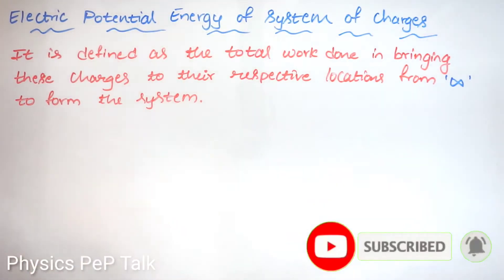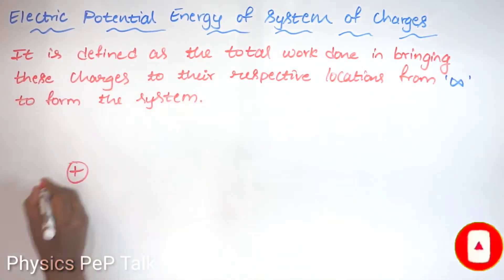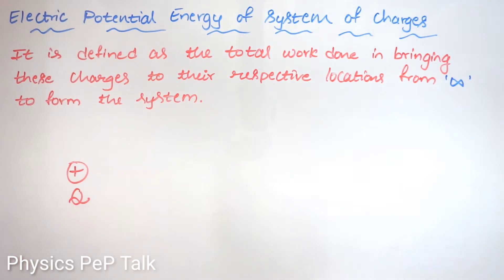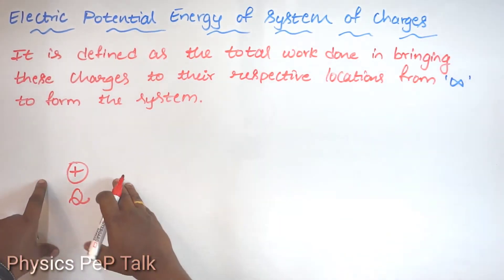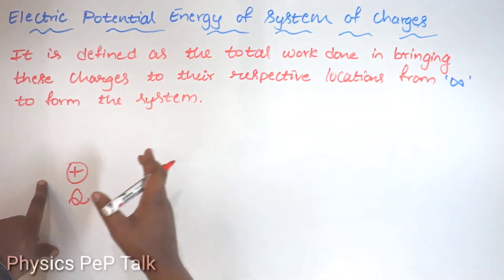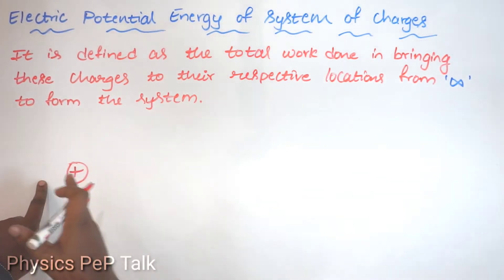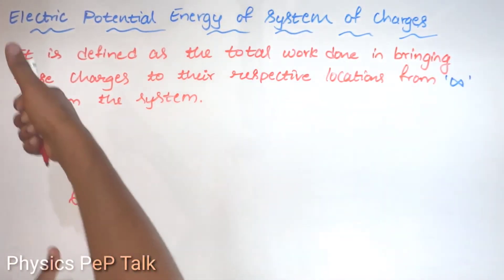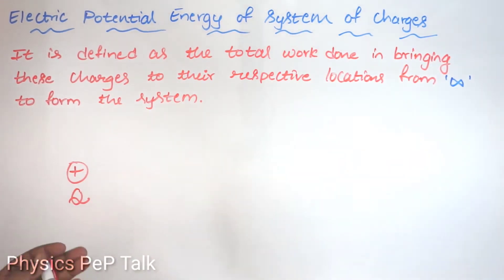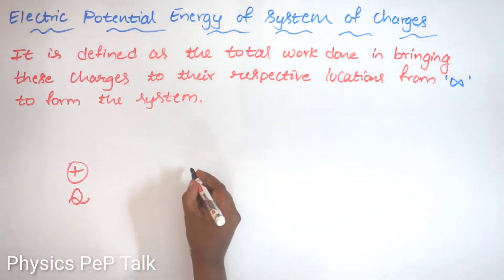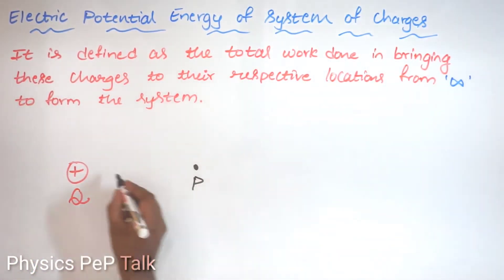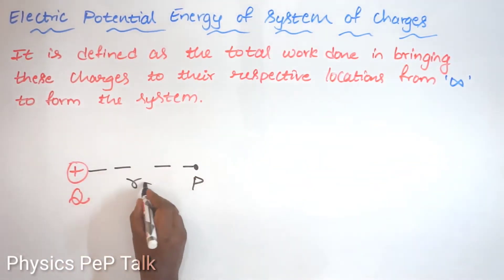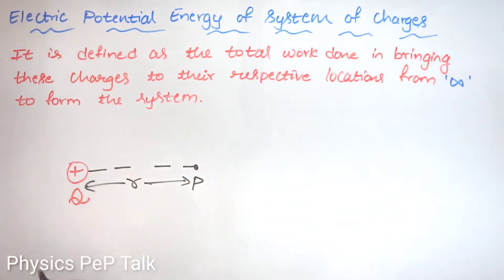First, I will consider a charge — let me consider this to be a positive charge. A positive charge will have an electric field going radially outwards in all directions. I will consider a point P which is at a distance R from this charge, capital Q.